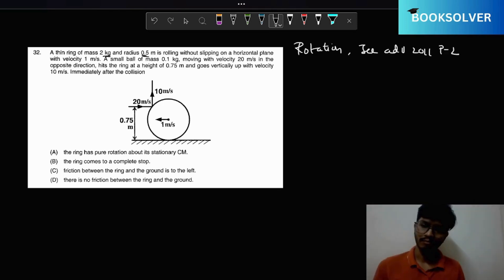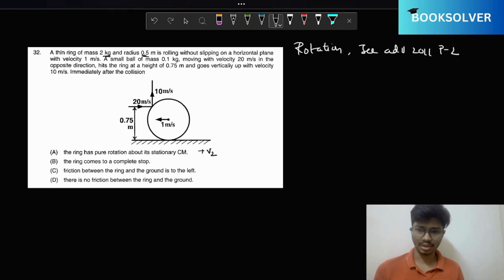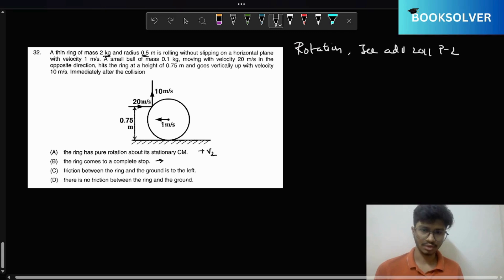First we need to calculate v2, v2 being the final velocity of the ring. Then, the ring comes to complete stop, so we need to calculate omega 2 and v2.